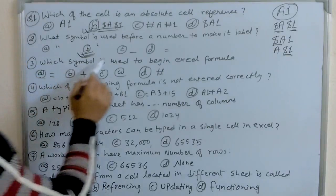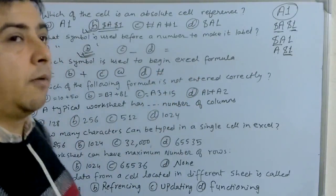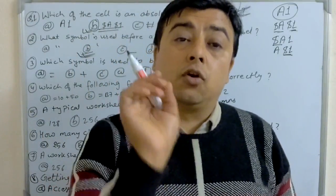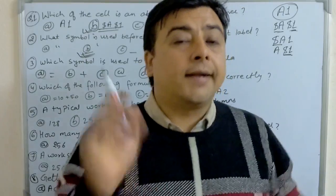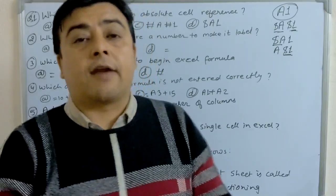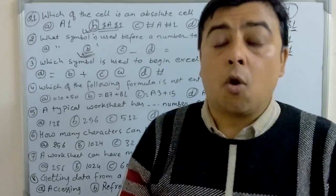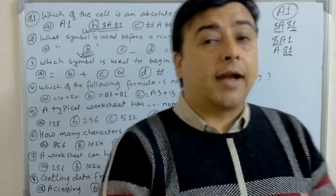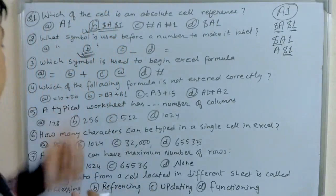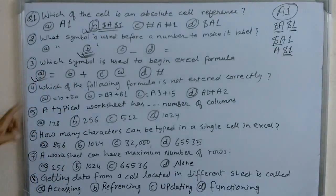Third question: which symbol is used to begin an Excel formula? To use an Excel formula, we have to use the equal sign. Until and unless we use the equal sign, we cannot write any formulas and we will not get the output. That's why always the Excel formula begins with the equal sign. That's why A is the answer.